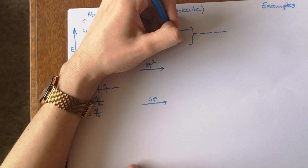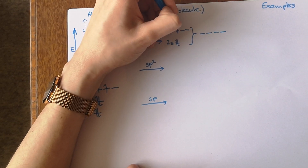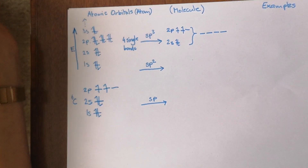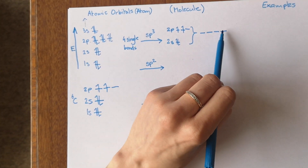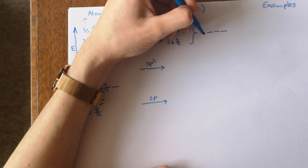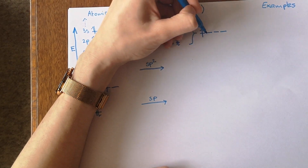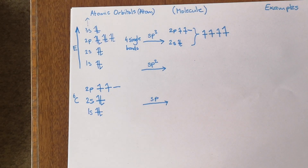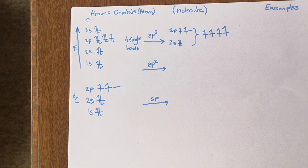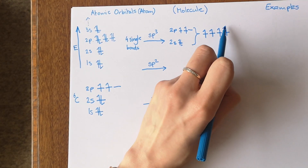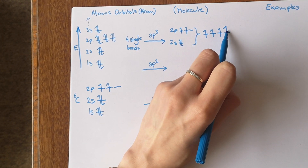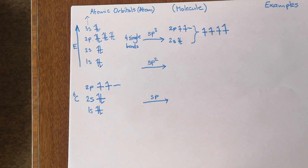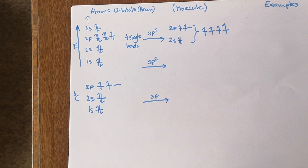Before, you had four electrons distributed across the 2s and separate p orbitals, but now you have four orbitals of equal energy — the sp3 orbitals — so one electron goes into each one. When it goes to make covalent bonds, each of these orbitals donates one electron and also accepts one electron from the other atom.